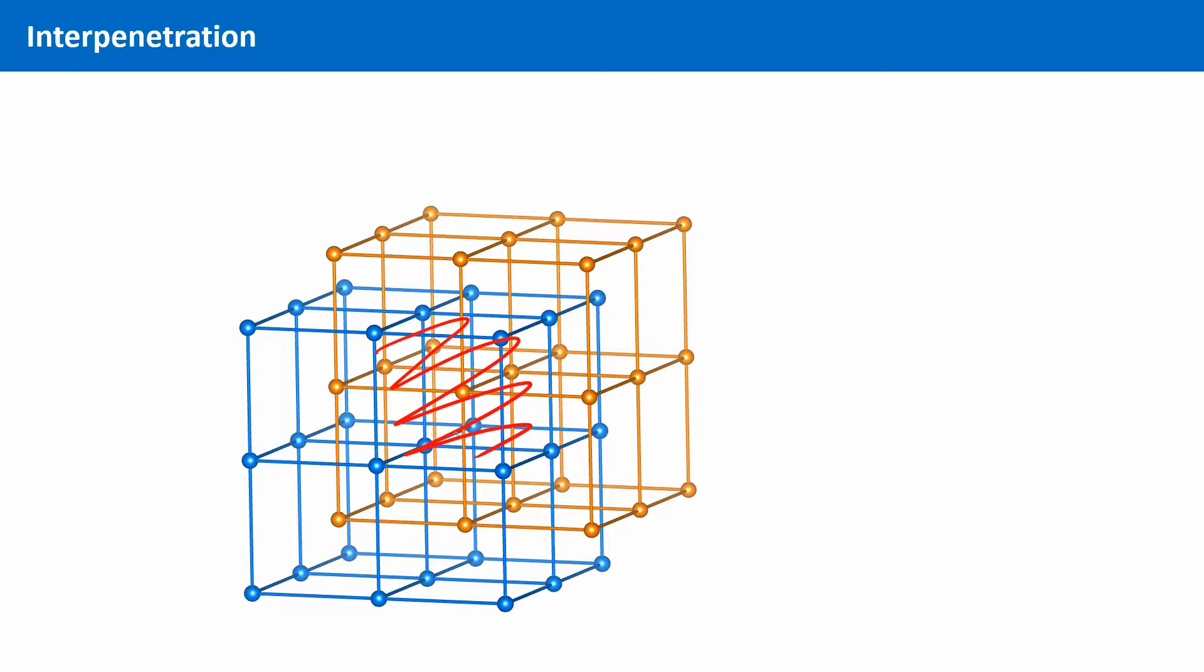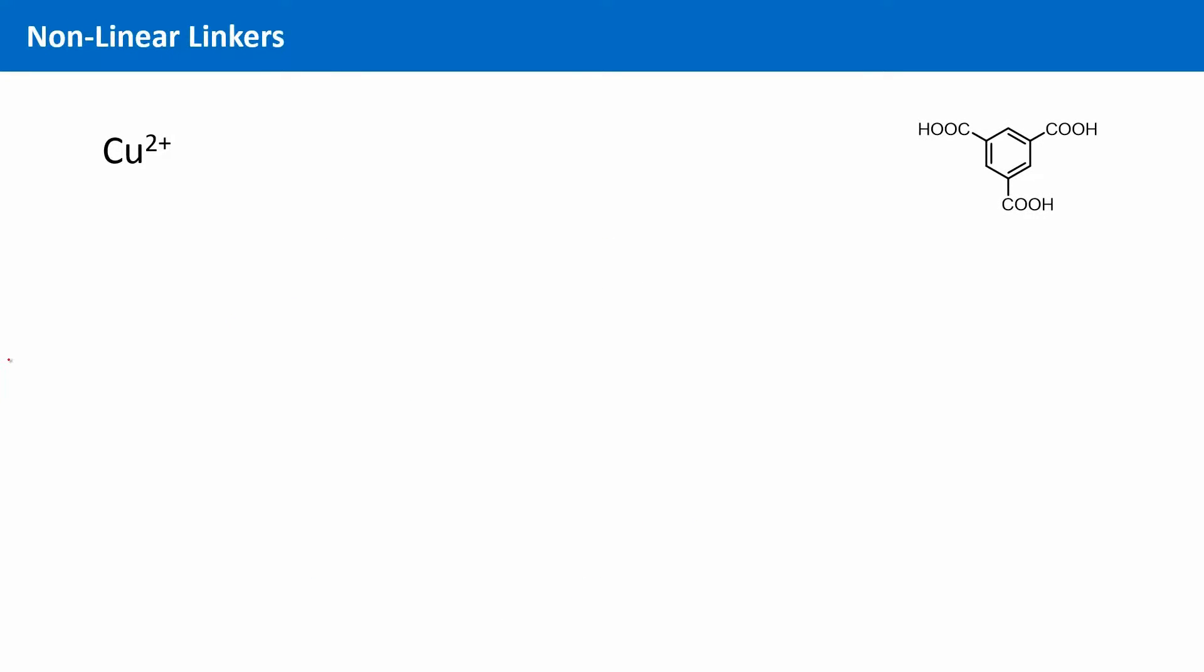So far we have only looked at linear linkers. Linkers that have the minimum number of extension points, namely two. But of course other organic building blocks can be used as well. For example benzene tricarboxylic acid, which is mostly just shortly called BTC.